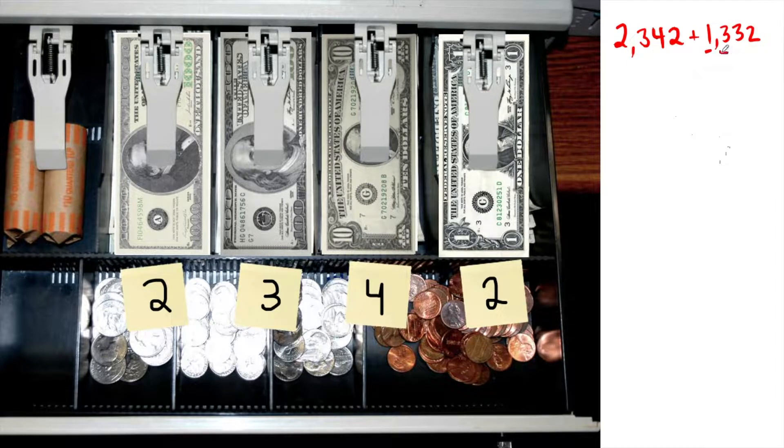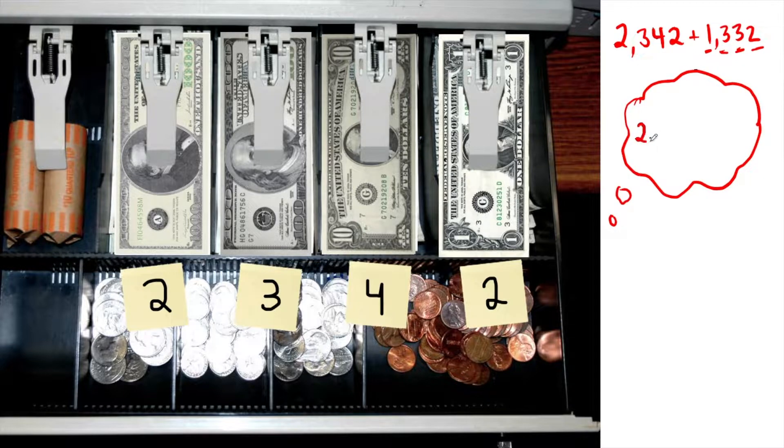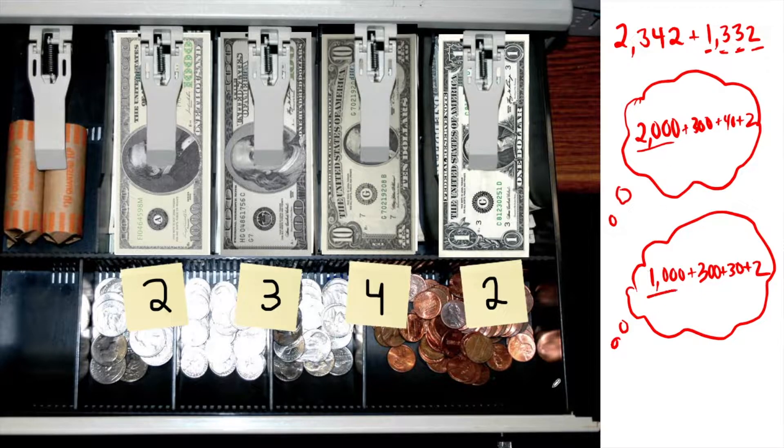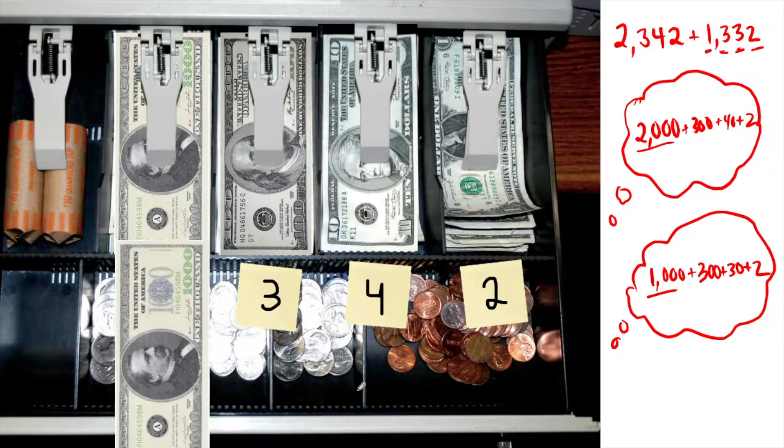So let's think about what would happen with the bills in the cash register drawer. Know that I'm thinking of the 2,000 as 2,000 plus 300 plus 40 plus 2. And I'm thinking of the 1,300 as 1,000 plus 300 plus 30 plus 2. Let's start with the $1,000 bill that needs to go into the drawer. It's going to zoom straight in.